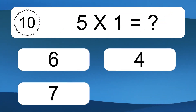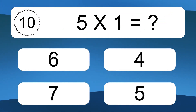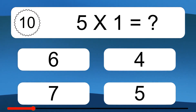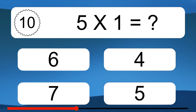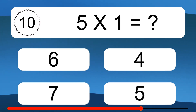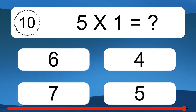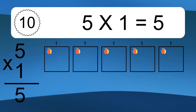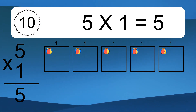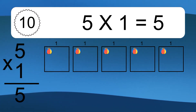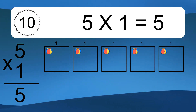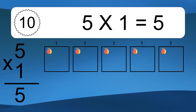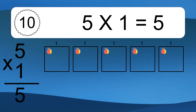Five times one equals what? Five times one equals five. We have five boxes, and each box has one colorful ball inside. If you count all the balls in all the boxes together, you will have five times one balls. This equals five balls.